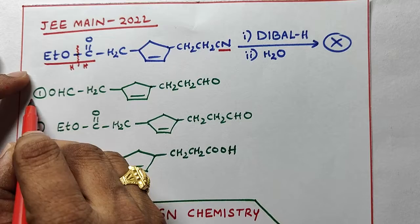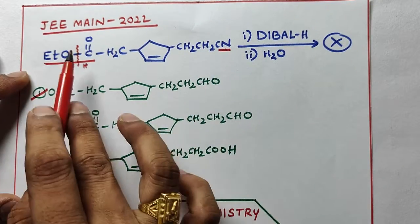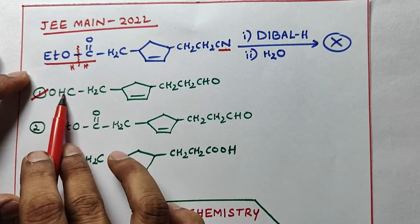Then what is the correct option? Option one. Got it? CN converted into CHO, here ester functional group converted into aldehyde plus ethyl alcohol remaining part.